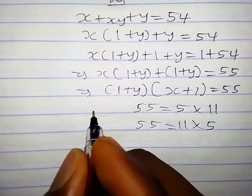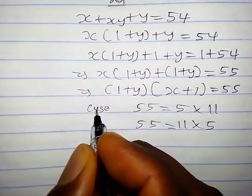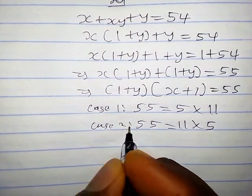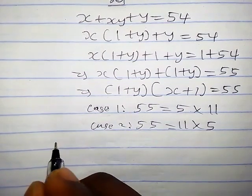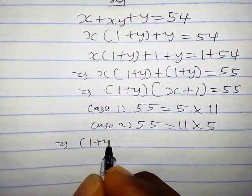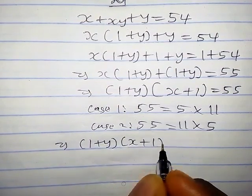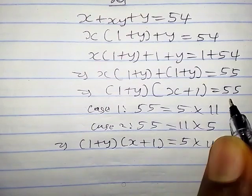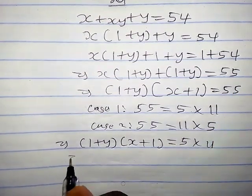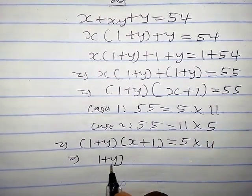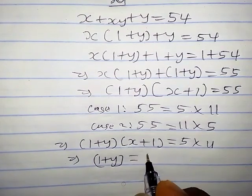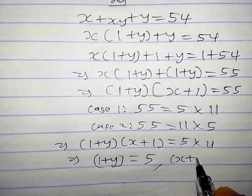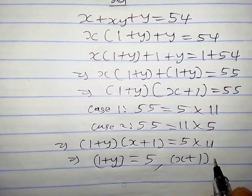We are going to consider two cases. For Case 1, we have 1 plus y times x plus 1 equals 5 times 11 instead of writing 55. This implies that 1 plus y equals 5, and x plus 1 equals 11.